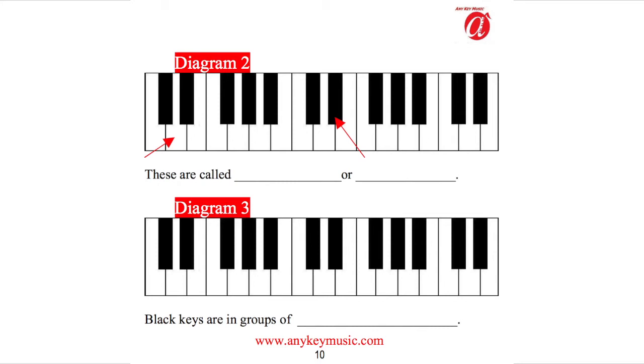look at the black keys. As you can see, there's groups of them: groups of two, groups of three, and so on. On the keyboard, you'll see groups of two, three, two, three, two, three.